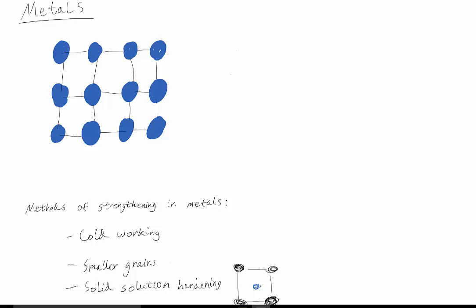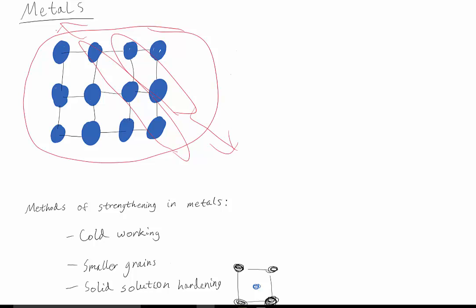So the first material we'll be talking about is metals. In metals, the atoms are arranged in an organized pattern like this, with planes, that when put under enough stress will slip. So that when the stress is removed, they are plastically deformed and don't return to the same position.